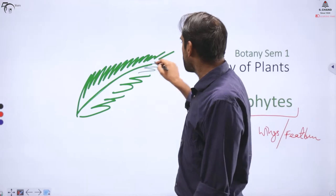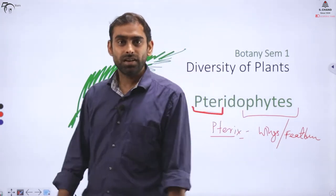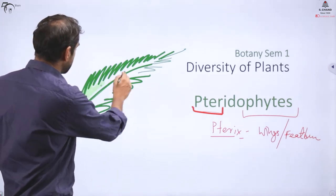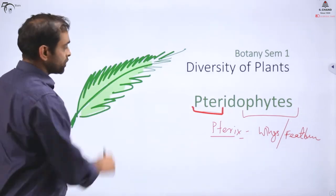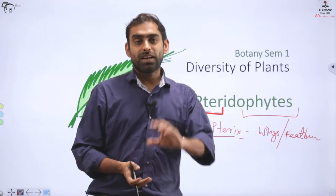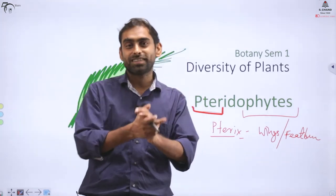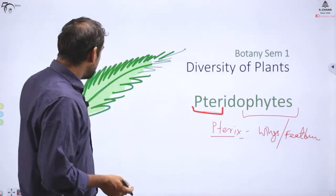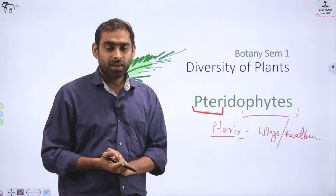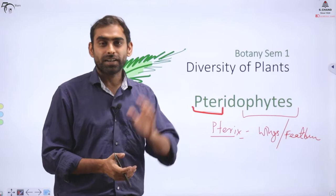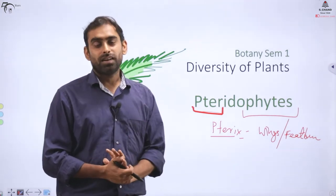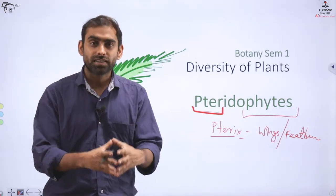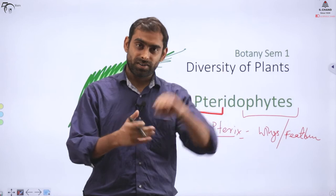You might have seen plants with these kinds of leaves — a lot of fine, feather-like leaves. This plant has a lot of resemblance to a bird's feathers or wings. You will commonly find these plants in hill areas. These pteridophytes or ferns represent the last category beyond bryophytes on the evolutionary scale.